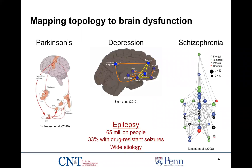These topologies have been mapped to brain dysfunction in Parkinson's, depression, and schizophrenia, implicating more local circuits in some diseases and more distributed broad circuits in others. In schizophrenia, there isn't necessarily one single area of dysfunction — rather, the overall topology of the brain differs compared to healthy controls. In this talk, we're going to examine epilepsy, which really hasn't benefited from this perspective of brain network dysfunction like these other diseases have. What will motivate us here is how we can begin to think about epilepsy as a network disorder.